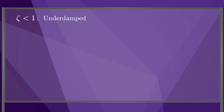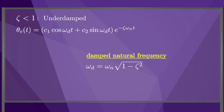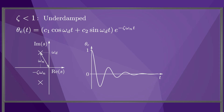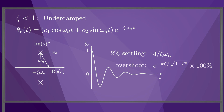Finally, the error dynamics are underdamped if the damping ratio is less than 1. In this case, the error response is a decaying sinusoid. The time constant of the decay is 1 over zeta omega n. The frequency of the sinusoid is the damped natural frequency omega d, which equals the natural frequency times the square root of 1 minus zeta squared. The roots are complex conjugates with a real value minus zeta omega n and an imaginary value plus or minus j omega d. This is the unit step error response. The 2% settling time is approximately 4 time constants. We can calculate the overshoot as e to the minus pi zeta over the square root of 1 minus zeta squared, and then express it as a percentage.